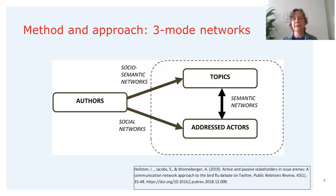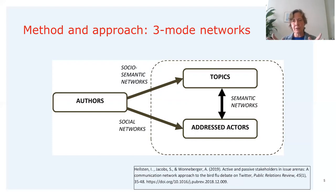The approach consists of three elements: the authors — the people who wrote and sent the tweet — and on the other hand the content of the tweets, so the topics represented by the hashtags, and the addressed actors in the content of the tweets. The relation between the author and the hashtags used would be a social-semantic network, while the relation between the hashtags and the addressed usernames is a semantic network. The authors and what other actors they are addressing constitutes a social network. In this approach we combine all three aspects.